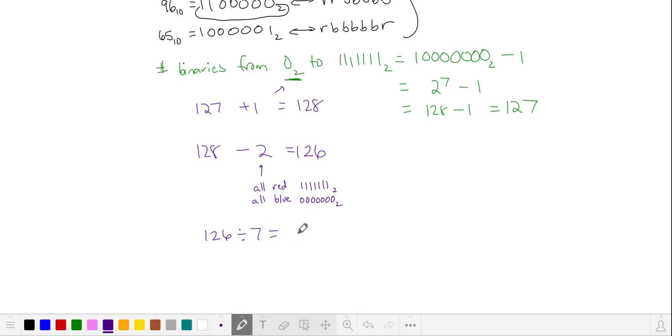So when I divide by seven, I get 18 and then I need to add back in my all red and all blue colorings. So 18 plus two, adding these back in is equal to 20. And that's our answer.